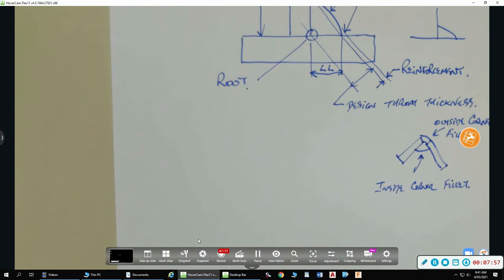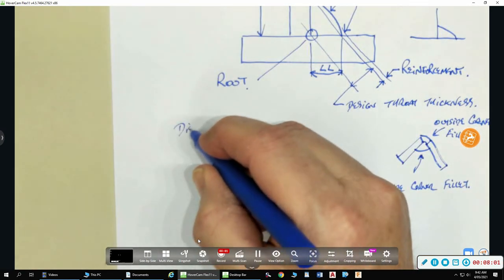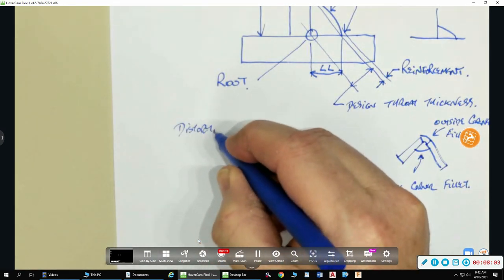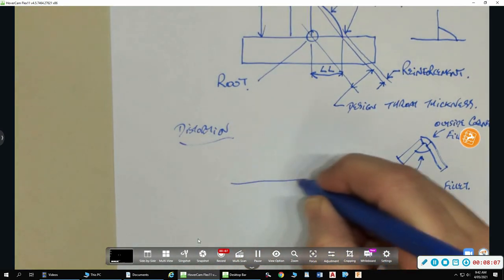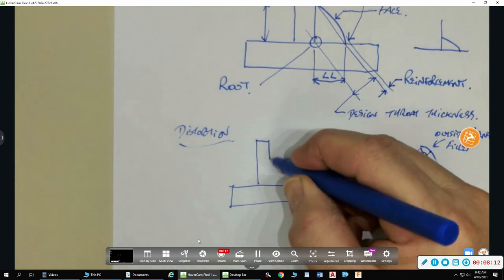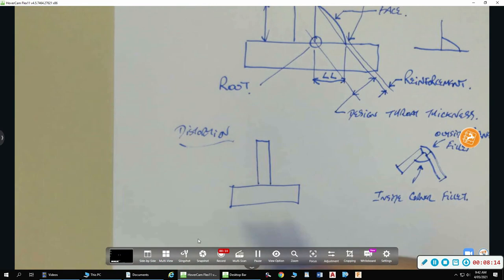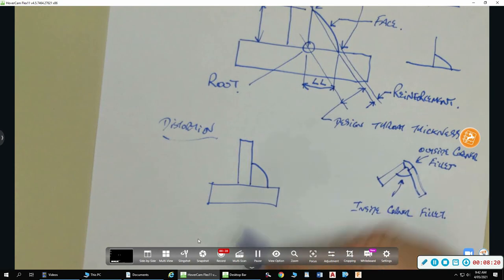Then we have, looking at distortion again here on the fillet, on the T joint. Now, again, I draw a T joint. And then I draw, and then I put a, I deposit a weld on that fillet.